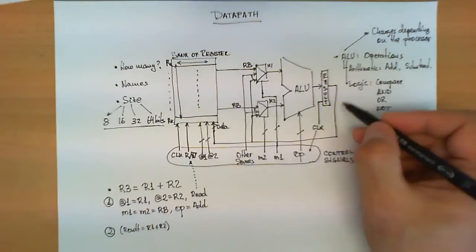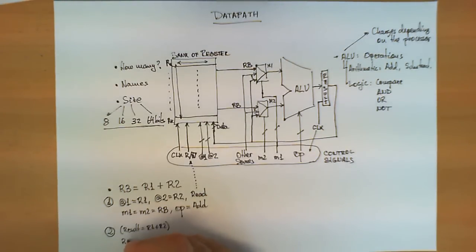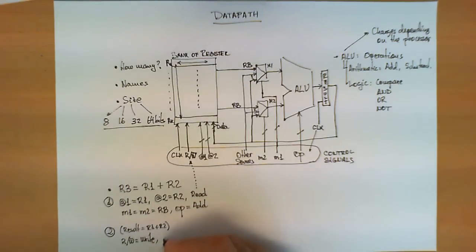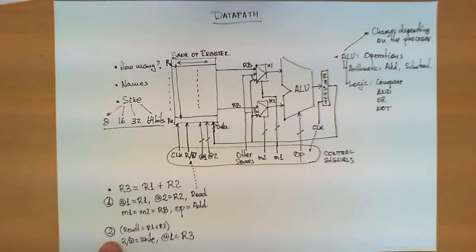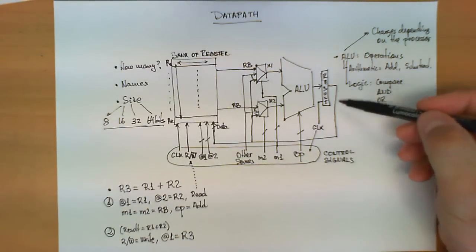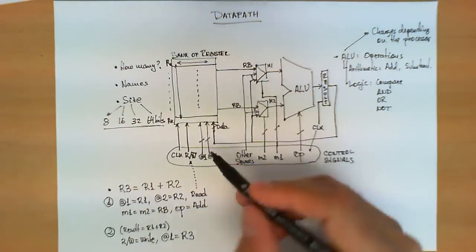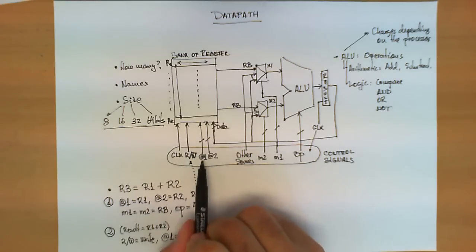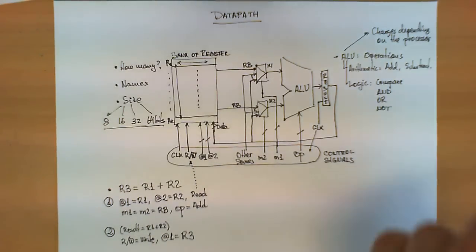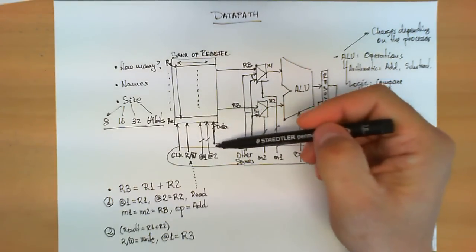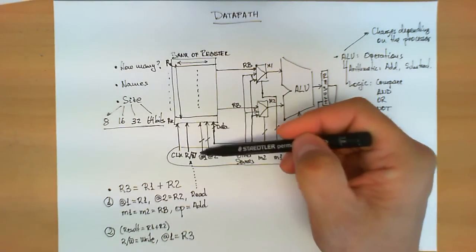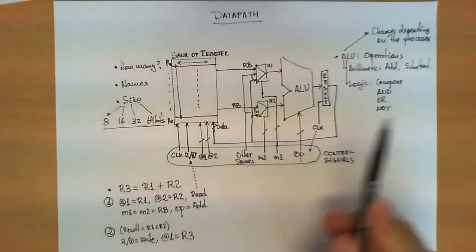We make sure that read-write is equal to write, and we also make sure that address 1 is equal to R3. During the second clock cycle, the value captured in the result register is being fed into the bank of registers, the write signal is active, and address 1 is R3. As a result, the bank of registers writes the data that comes through this input to the address specified by address 1, because write is equal to 1.